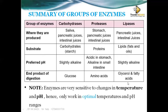Enzymes are very sensitive to changes in temperature — they can be denatured if the temperature is too high. They are also sensitive to pH, which is why each enzyme has a specific pH in which it works. Enzymes only work within optimal temperature and pH ranges, such as pH 3–5 (acidic), pH 8–10 (alkaline), or pH 7 (neutral).